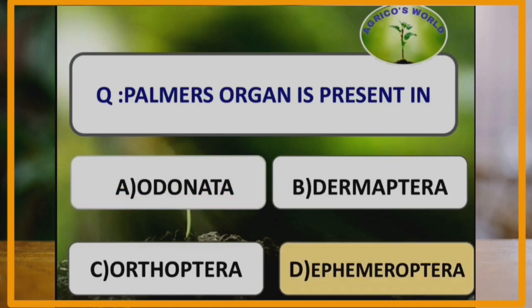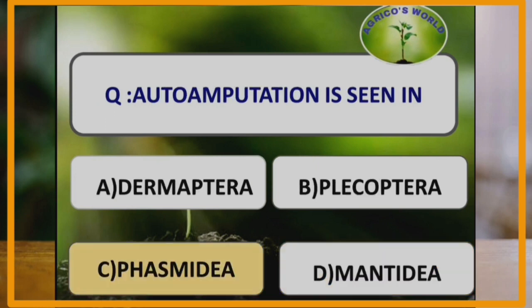Palmus organ is present in the order Ephemeroptera. The palmus organ is a statostatic organ present in the head of larva and adult.